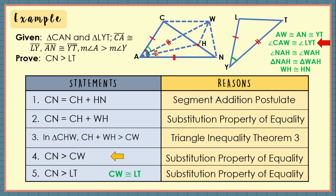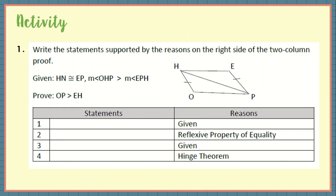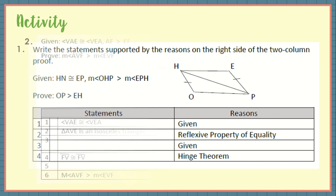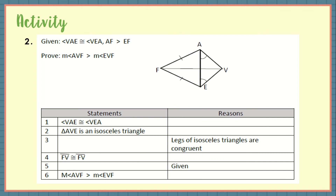And we are done with the proof of the hinge theorem. That ends this lesson. Great job, grade 8 learners! I guess you are now ready to practice and apply what you have learned from this lesson by answering the activity provided. Number 1: write the statements supported by the reasons on the right side of the two-column proof. Given that HN is congruent to EP and the measure of angle OHP is greater than the measure of angle EPH, prove that OP is greater than EH.